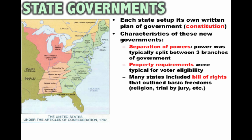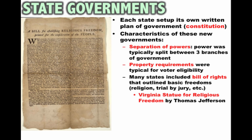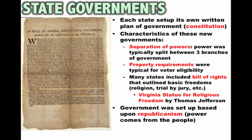Many states included a bill of rights that outlined basic freedoms in the state constitution — freedom of religion, trial by jury, and other rights they worried might be taken away by too powerful a government. In particular, Virginia created the Statute for Religious Freedom by Thomas Jefferson, passed by the Virginian Assembly. It de-established the Church of England and provided religious freedom for all, including Jews and Catholics. Jefferson was very proud of this accomplishment, well before the Bill of Rights or the First Amendment.